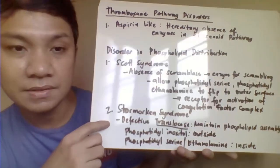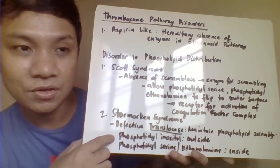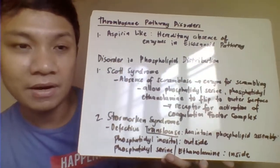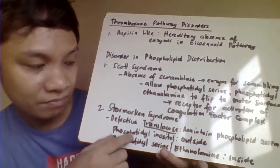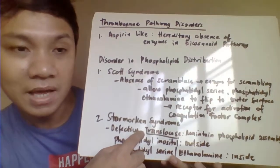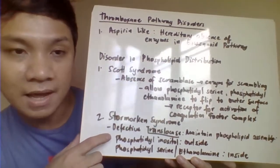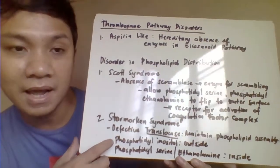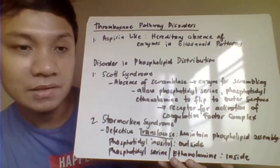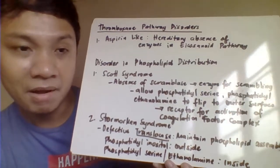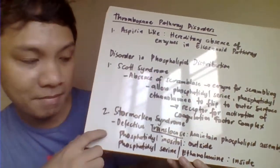Stormorken syndrome is the opposite of SCAT syndrome. Even without activation — without an agonist or ligand — the phospholipids still undergo the flipping process. This is because of a defect in translocase, which normally maintains the assembly of the phospholipid membrane — keeping phosphatidylcholine on the outside and phosphatidylserine and phosphatidylethanolamine on the inside. They should only flip once the platelet undergoes activation with an agonist. In Stormorken syndrome, flipping occurs even without an agonist.